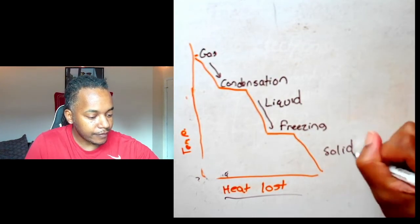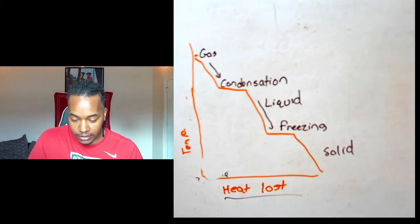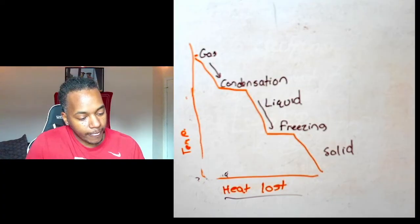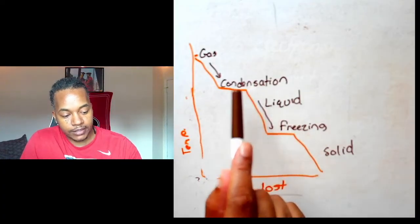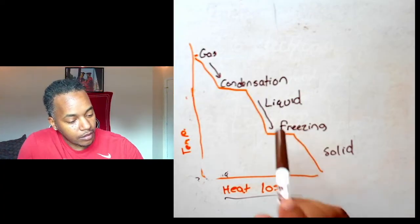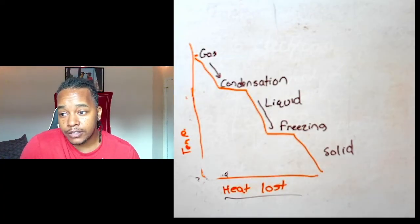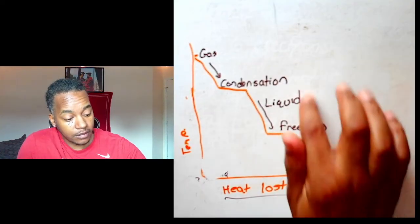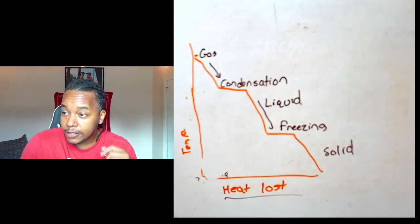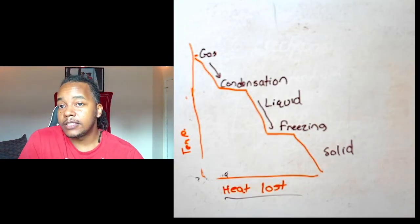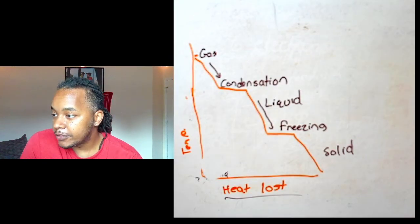So it's just the reverse of a heating curve, but you have different terms. Condensation is when you transfer gas to a liquid, and when the liquid changes to a solid is called freezing. Solid going to a liquid will be called melting, liquid going to a gas was evaporation. If you have any questions, please let me know and I'll make sure I clarify for you.